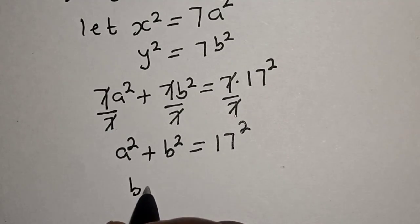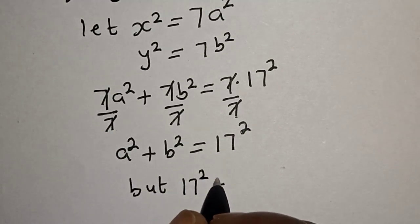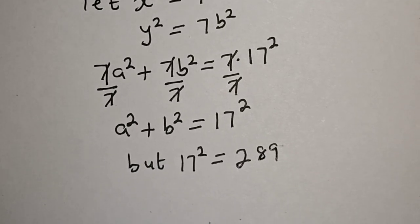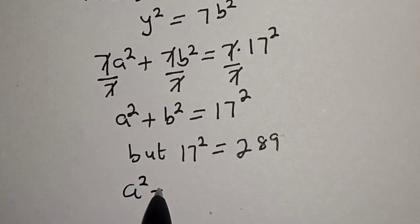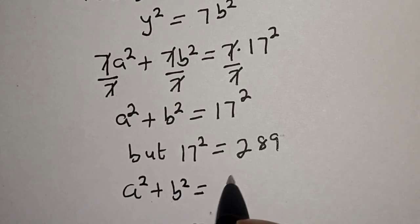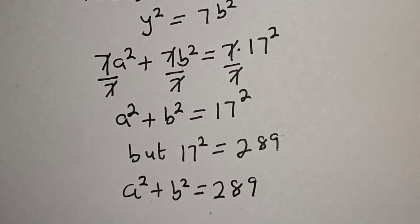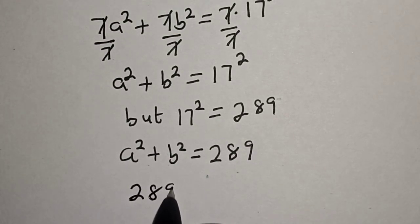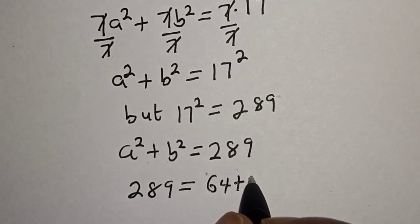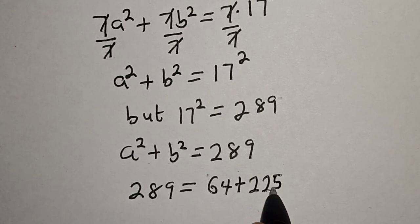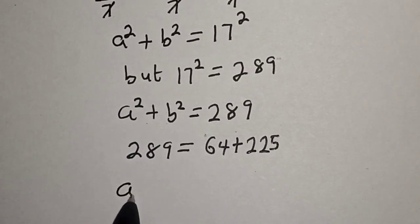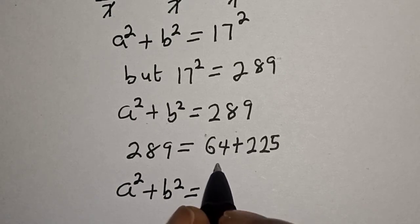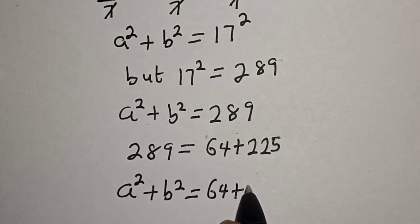But 17 squared is equal to 289. Then we have a squared plus b squared is equal to 289. Now let's split 289 as well. 289 is equal to 64 plus 225. Then we have a squared plus b squared is equal to 64 plus 225.